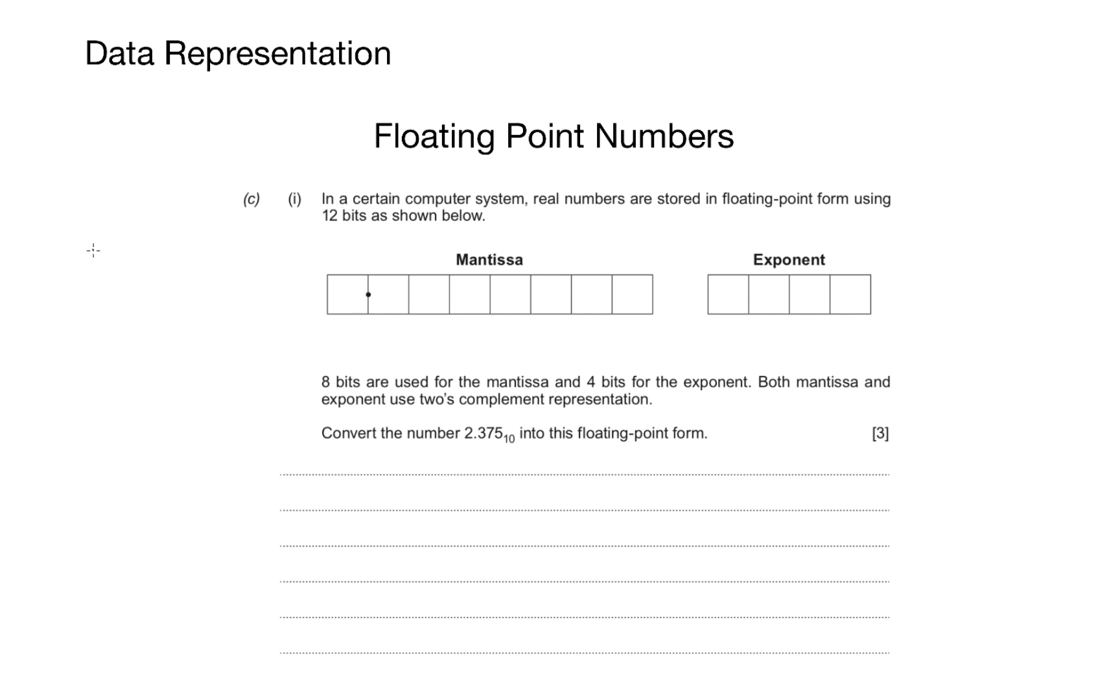Before we start this question, we need to talk about what floating points actually are. A floating point simply means a decimal point. Now every binary number after the decimal point gets halved every time, whereas everything to the left of the decimal point will double every time. So on the right hand side of the decimal point it starts at 0.5, then we half it again to 0.25, half it again to 0.125, half it again to 0.0625 and so on.